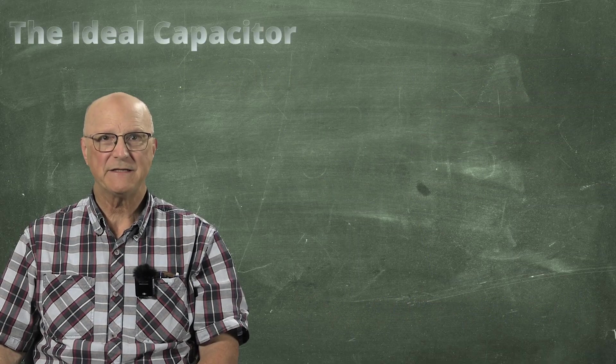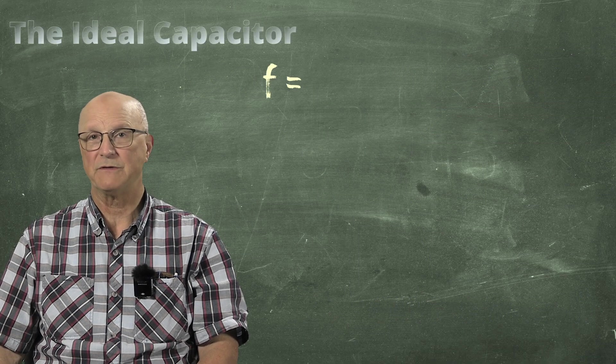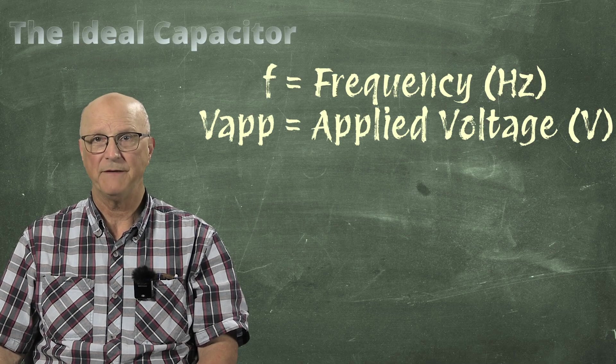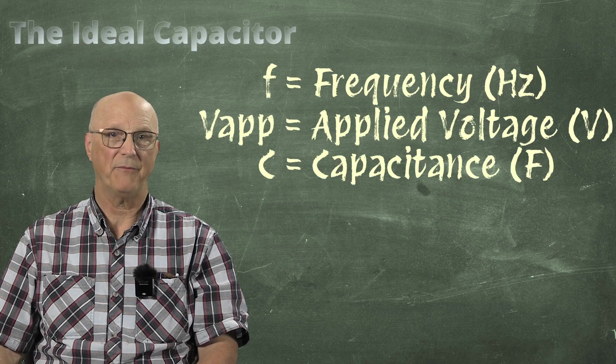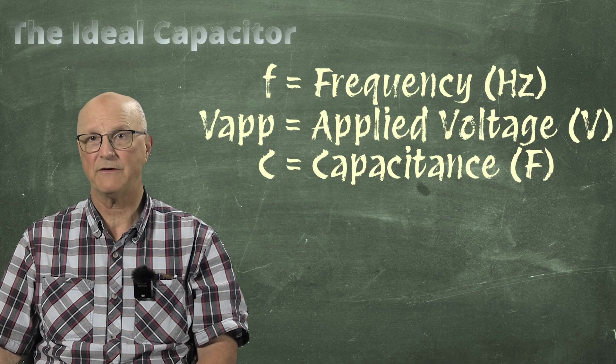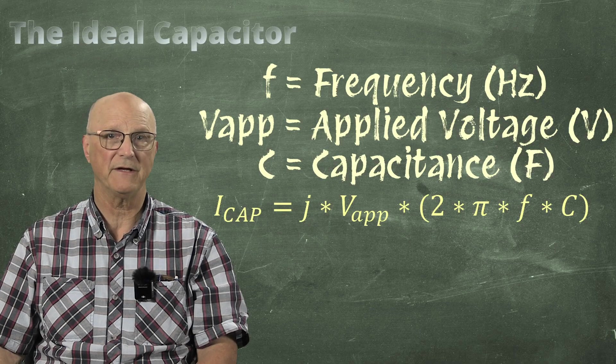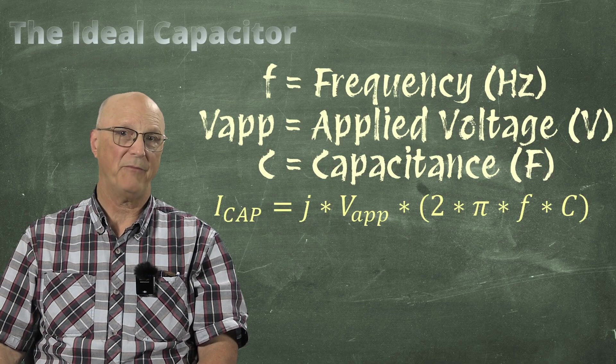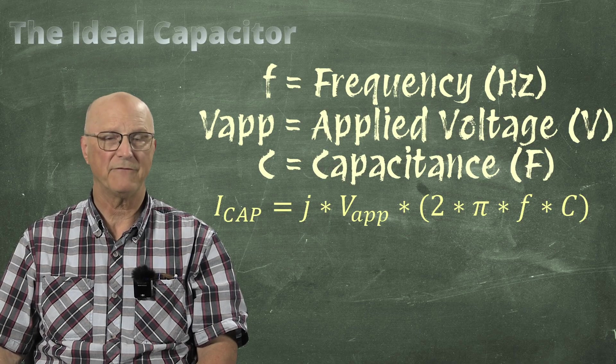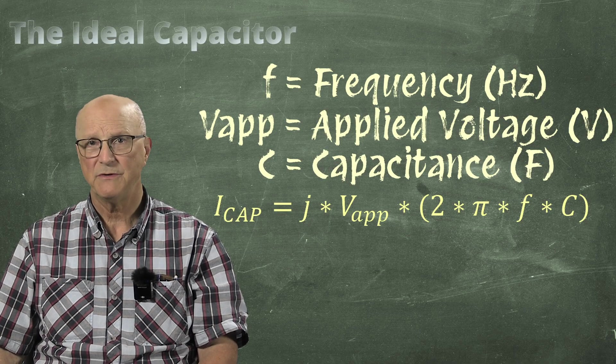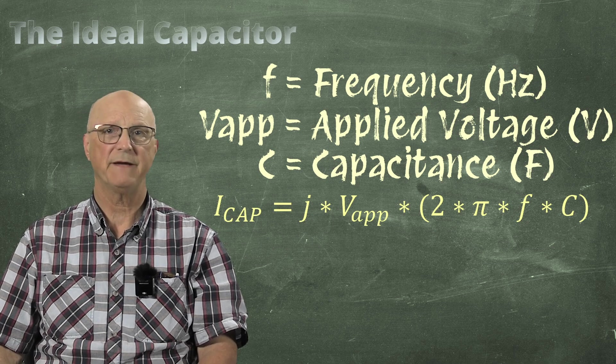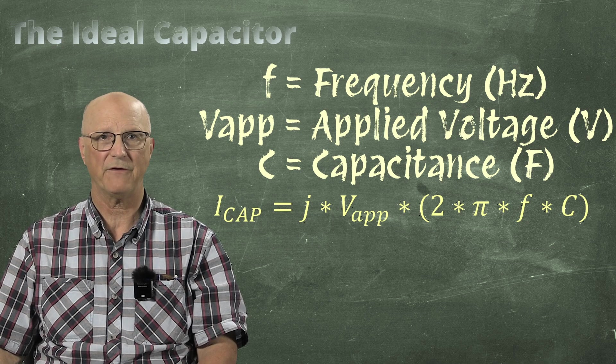For a detailed look at this, I would point you to my video on understanding capacitance. There's a link up in the corner and down in the description for you. When a sinusoidal AC voltage of a given frequency F and a given voltage V applied is applied to an ideal capacitor, the current to the capacitor is easily calculated with this simple formula. The current to the capacitor is equal to J times the applied voltage times 2 times pi times the frequency in Hertz times the capacitance in Farads.